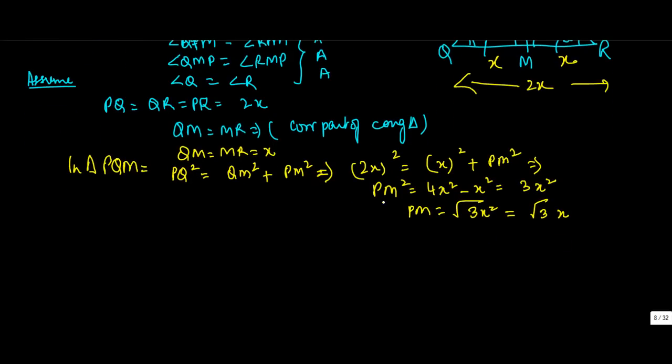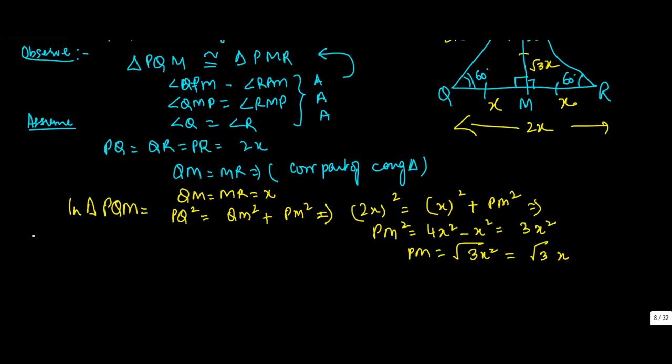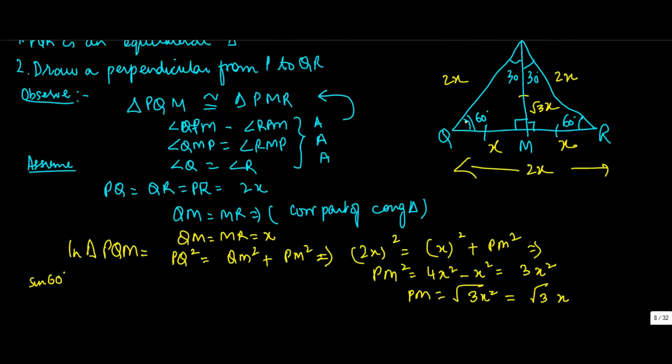So in the triangle, sin 60 degrees. If I have to calculate sin 60 degrees, this will be equal to PM upon PQ, root 3X upon 2X, which gives root 3 upon 2.